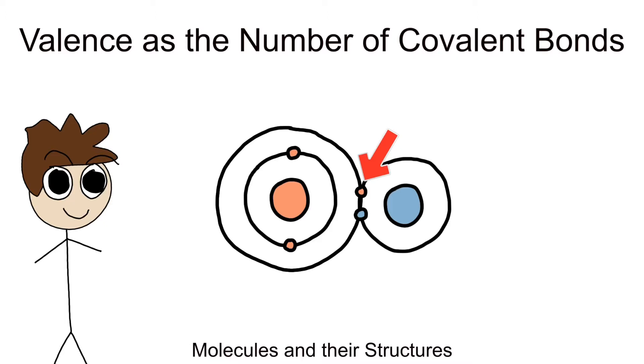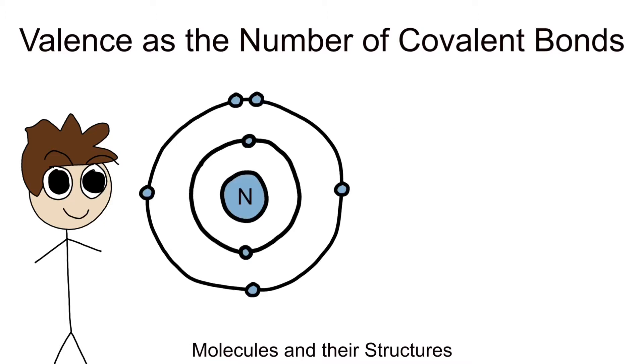So it shouldn't be too surprising to know that nitrogen, for example, has a valence number of three and can form three covalent bonds, while a hydrogen atom with a valence number of one can only form one covalent bond.